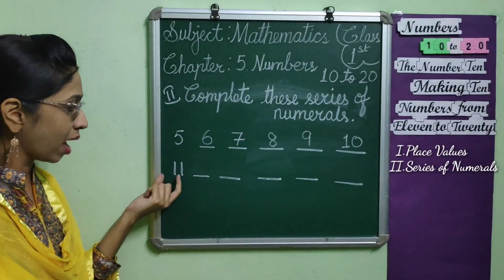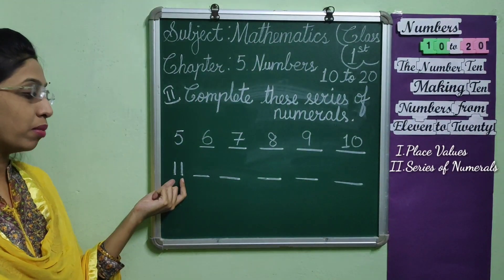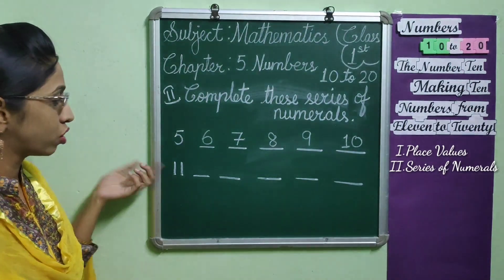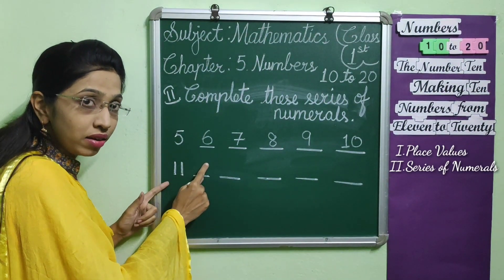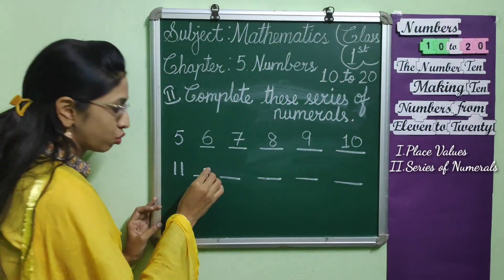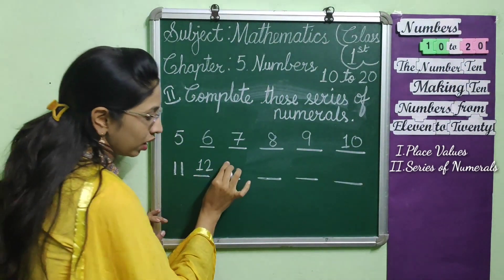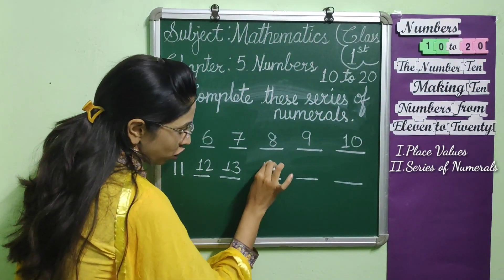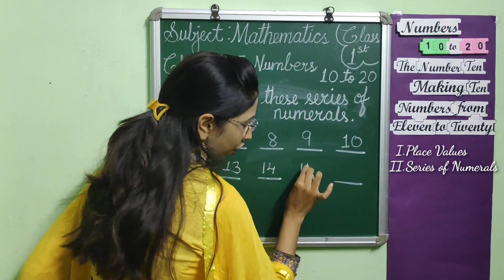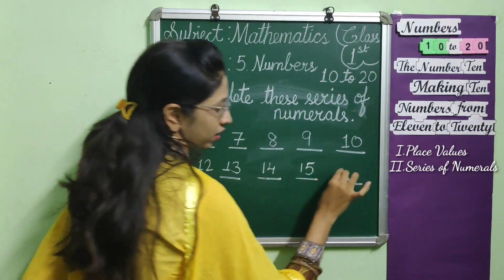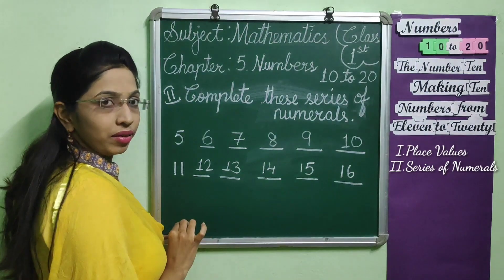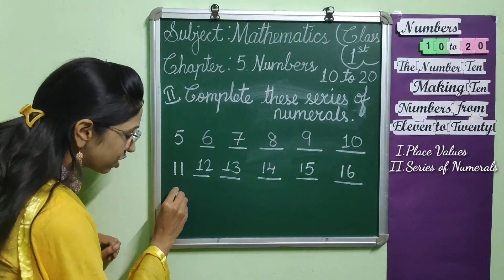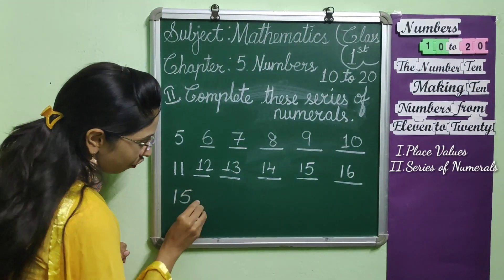Now, the next example starts at number 11. You have to write the series of number 11. So, what is the next number after 11? It is 12. Then 13. Then 14. Then 15. Then 16. Have you understood, children? If you have understood, comment me. The series after 15 continues similarly.